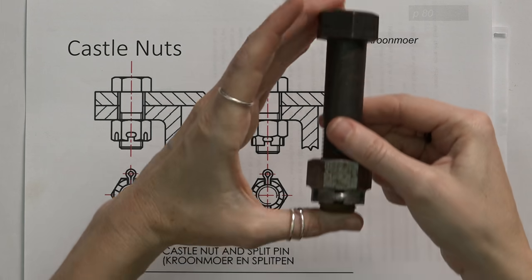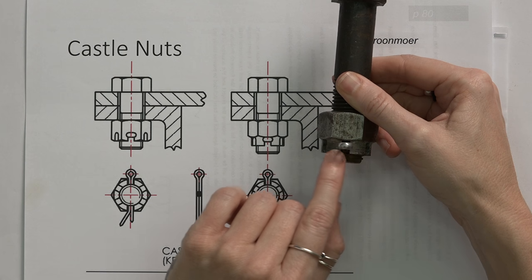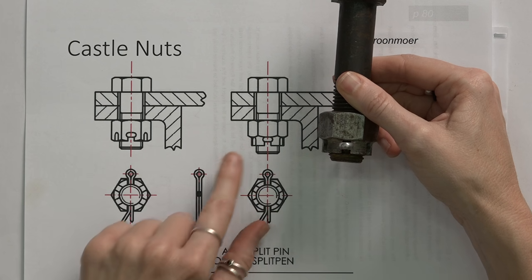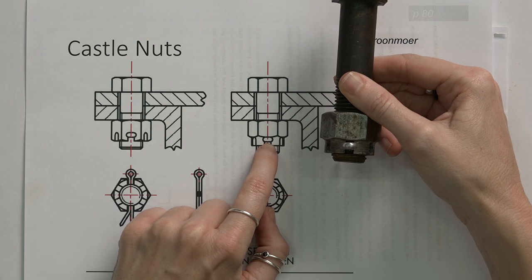If you look at it from this side, very important here, can you see that this split pin head is slightly wider than this groove? So common mistakes that students make here is that they make this split pin head smaller than that groove.